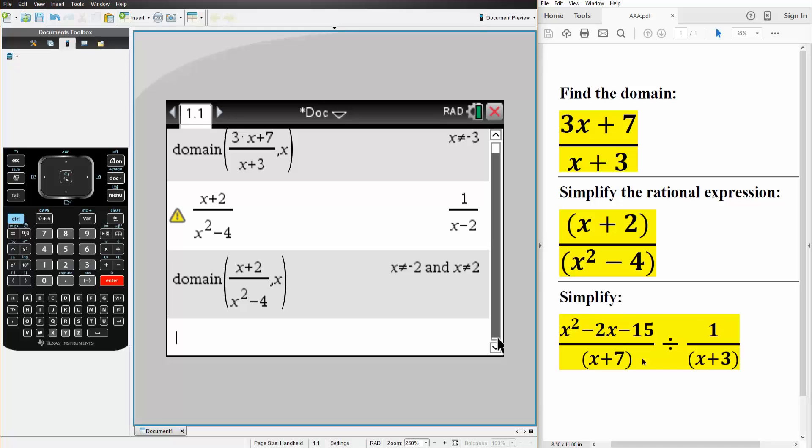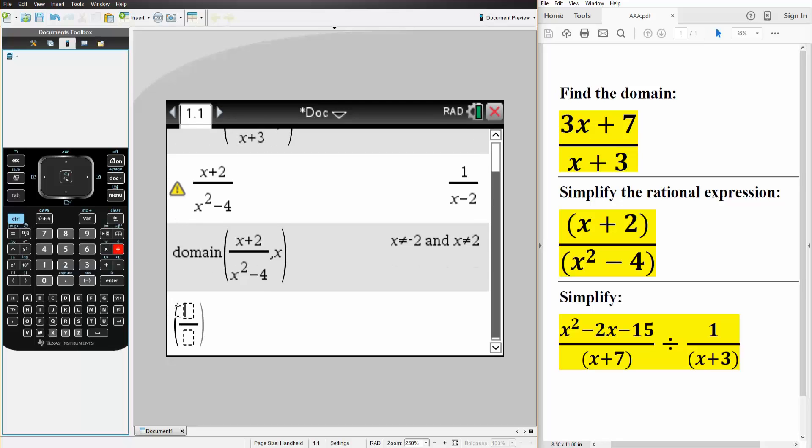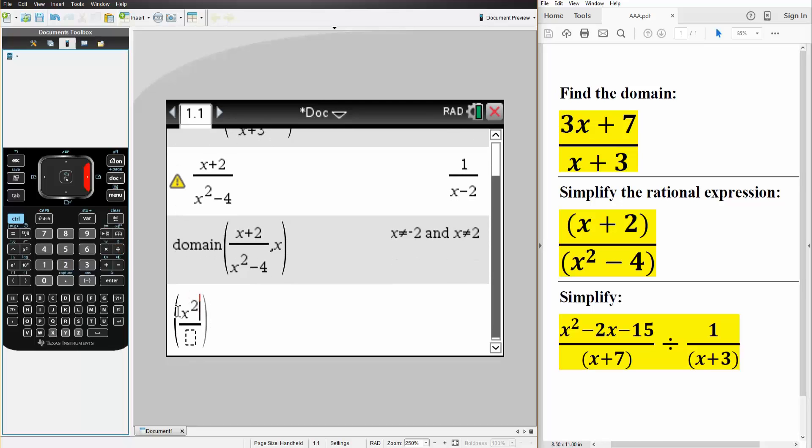And the last one, we want to simplify this. So we will just write what we have again, control division, we write x squared minus 2x minus 15 divided by x plus 7, then we have a one division sign for this, and the exact same thing. So 1 divided by x plus 3.